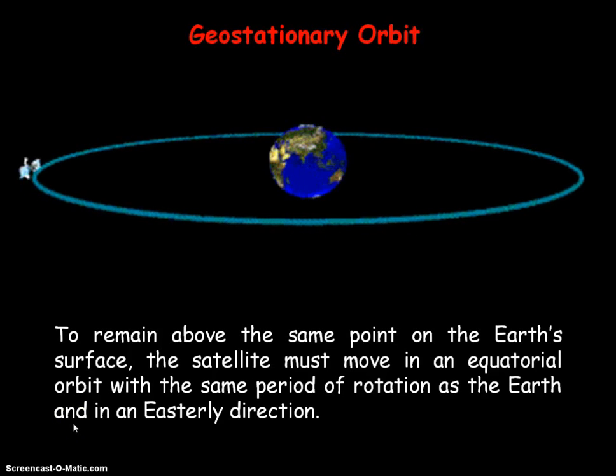That means it can always transmit or receive signals between the dish on Earth and the geostationary satellite. So the dish on Earth doesn't need to change its orientation to track a satellite in the sky if the satellite was not geostationary.